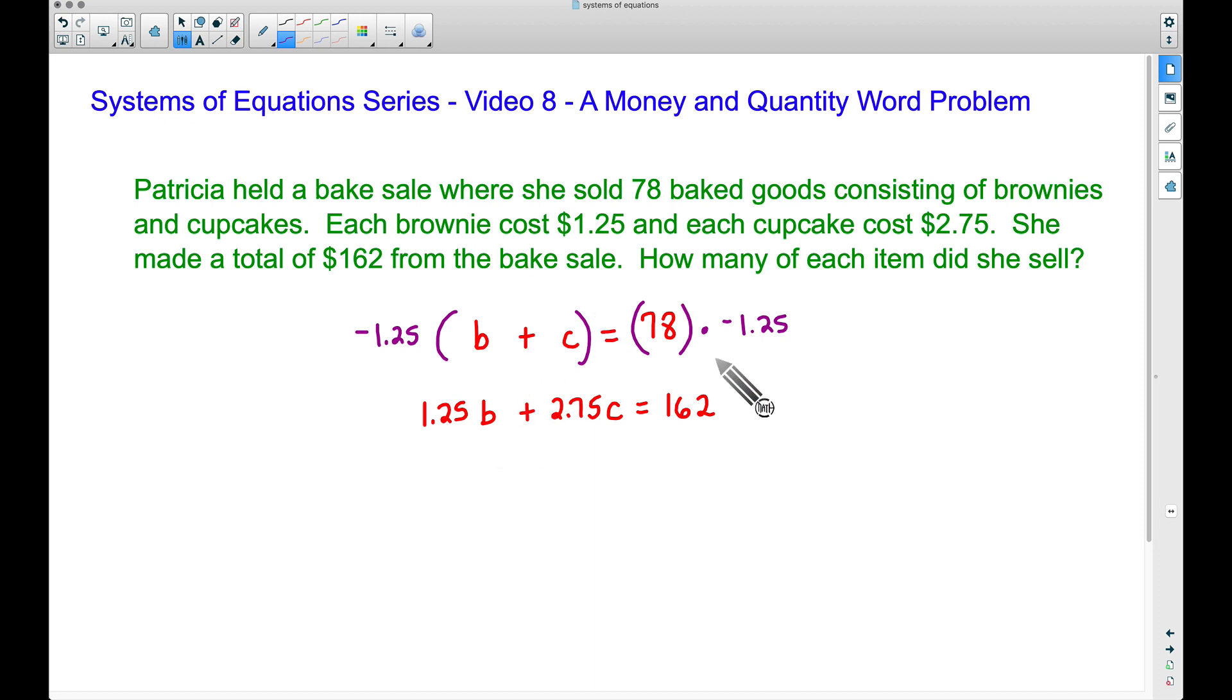So applying the distributive property here, -1.25 times b is -1.25b. -1.25 times c is -1.25c. This is equal to, now let's multiply 78 times -1.25.